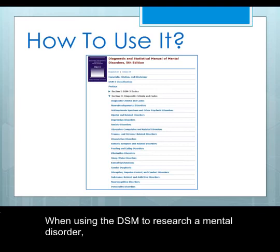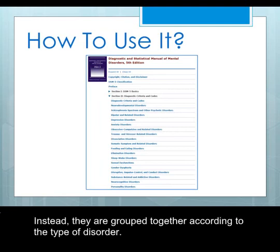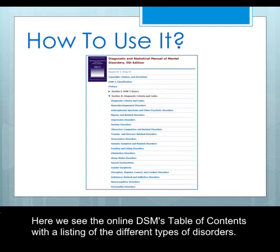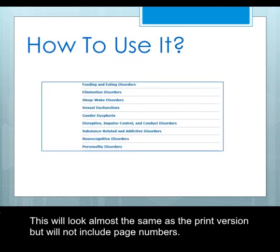When using the DSM to research a mental disorder, it is important to know that they are not organized in alphabetical order like an encyclopedia. Instead, they are grouped together according to the type of disorder. Here we see the online DSM's table of contents with a listing of the different types of disorders. This will look almost the same as the print version, but will not include page numbers.